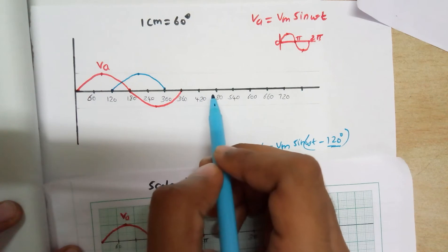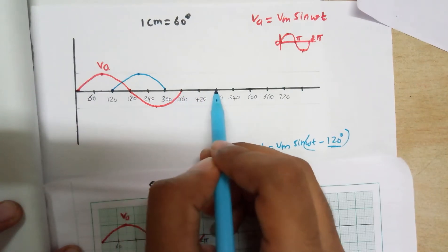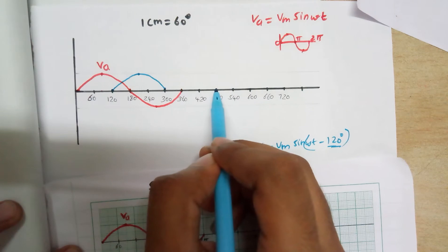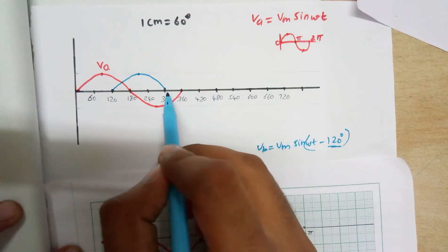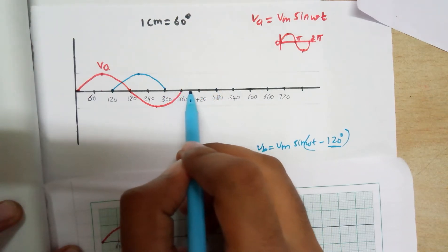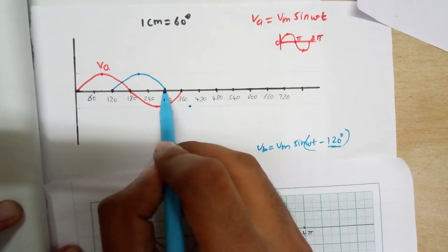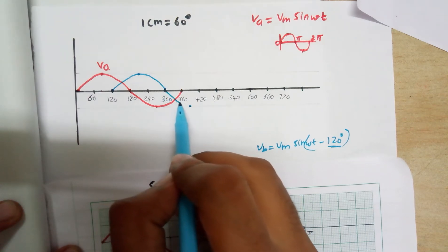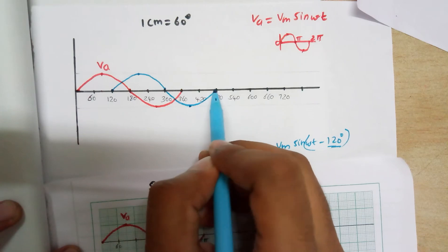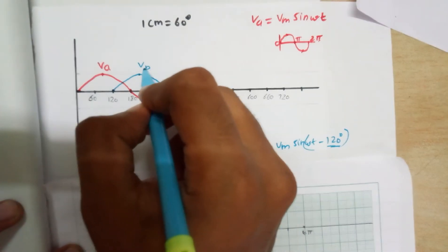After pi to 2 pi, the bottom part of Vb starts from 300 degrees and conducts for 180 degrees, ending at 480 degrees. There will be a peak point after 1.5 cm. Connect these points. This is our Vb.